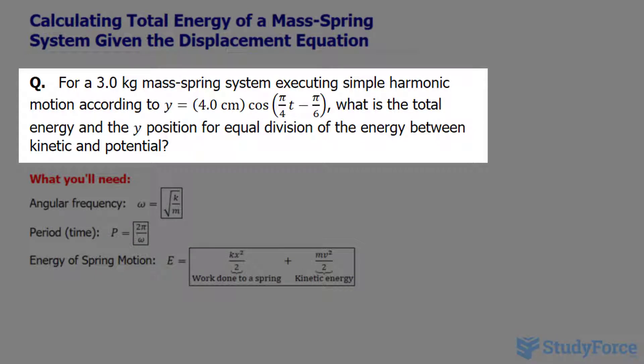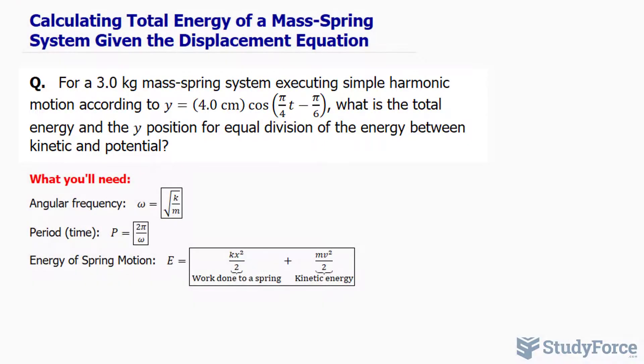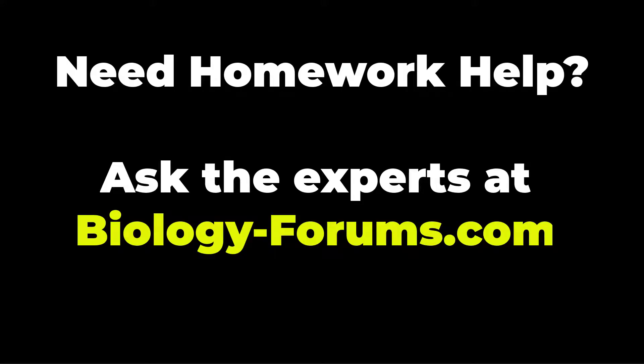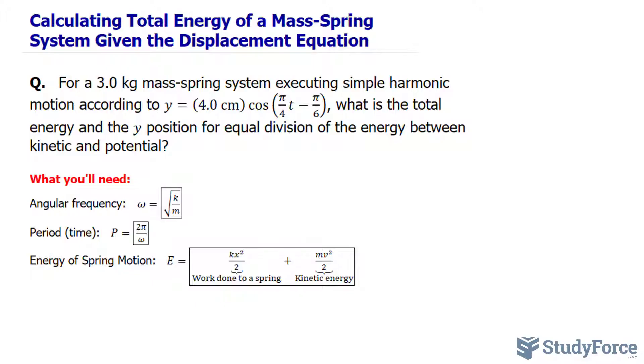So this is a two-part question. The first one is asking about the energy and the second one is asking about what position y does the mass-spring system have to be so that the potential and kinetic energy are equal. Let's begin with the easier of the two, the easier of the two being the total energy.